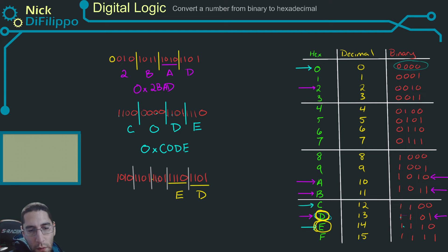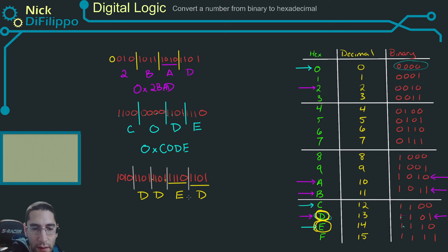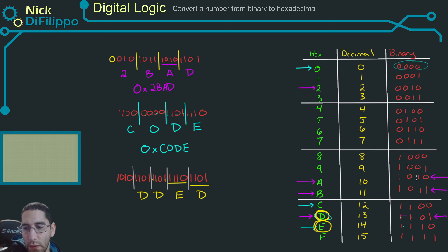Next, 1101 — we just did that — it's a D. Then 11101 is also a D. And 1010 is an A.